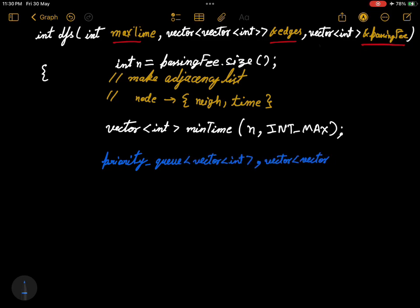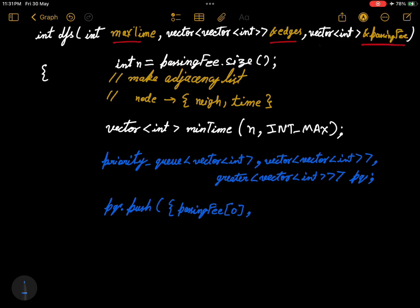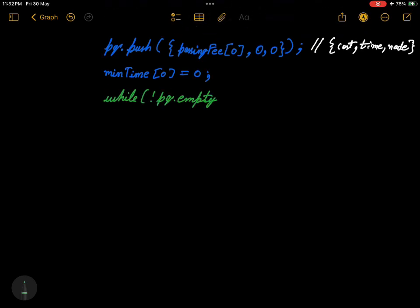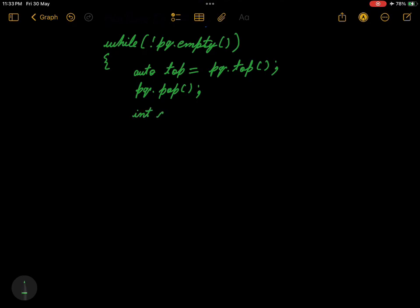Now let's define our priority queue: vector of integer, vector of integer, it will be a min heap. Now let's push the passing fee for the starting node, the starting node time, and the starting node. Of course, time is 0 and node is 0. We will also mark the minimum time of node 0 equals to 0.